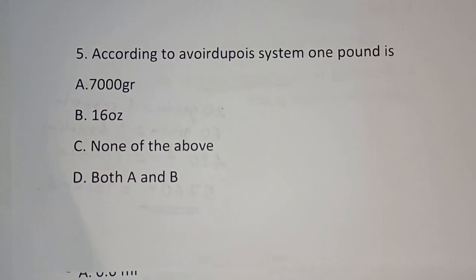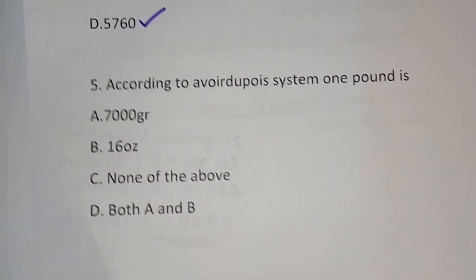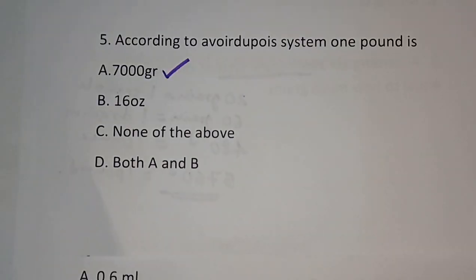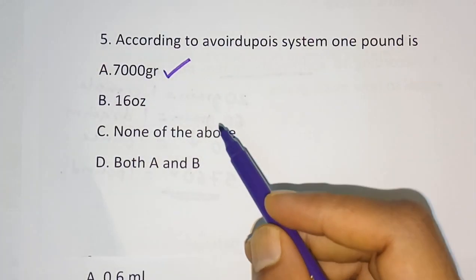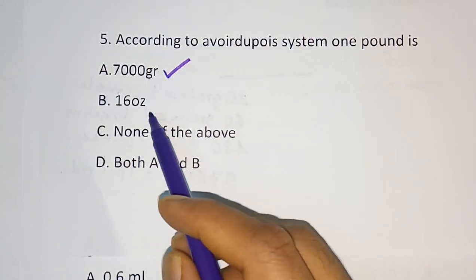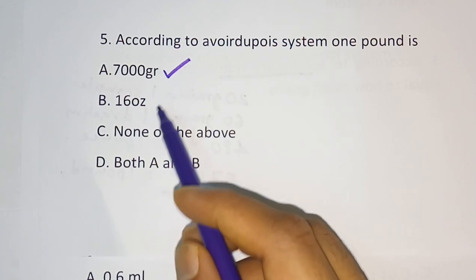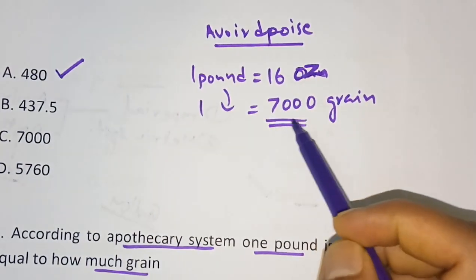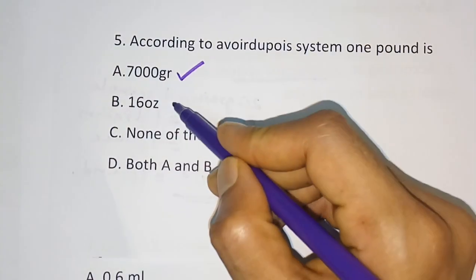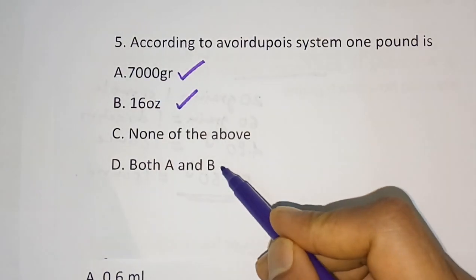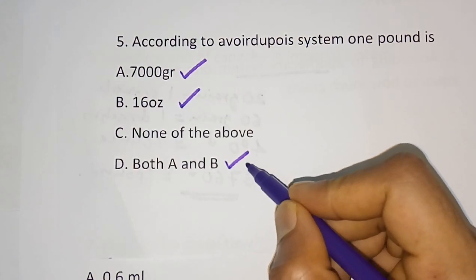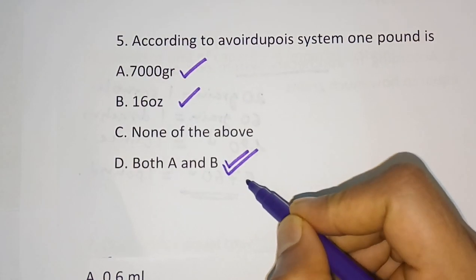Question number 5: According to the avoirdupois system, 1 pound is equal to? We already studied this — 1 pound is equal to 7,000 grains. Option A is 7,000 grains and option B is 16 oz, both of which are correct since 1 pound equals 16 ounces and also 7,000 grains. So option D — which combines both — is the most correct answer.